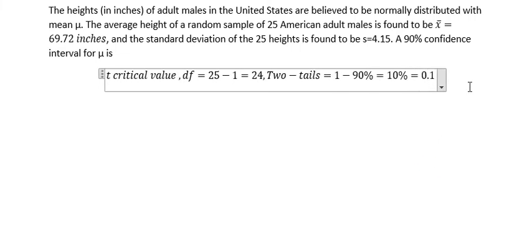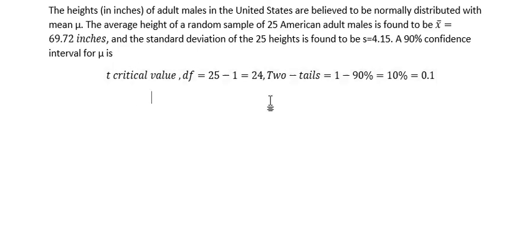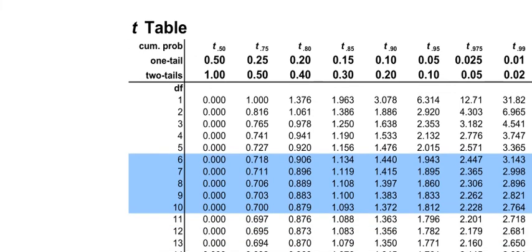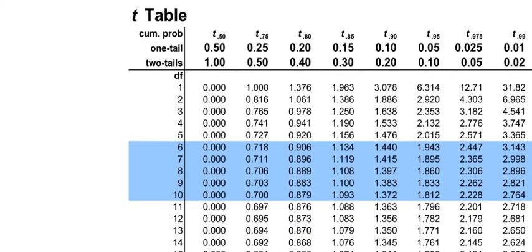So now we will use the table for the t-critical value and we have the df is 24 and the value for 2 tails is 0.1. So we will have the table in here. After we calculate, that is 2 tails, it is 0.1.